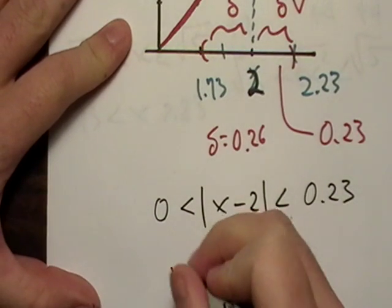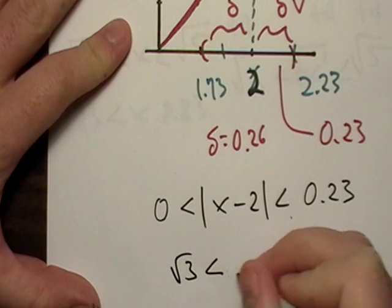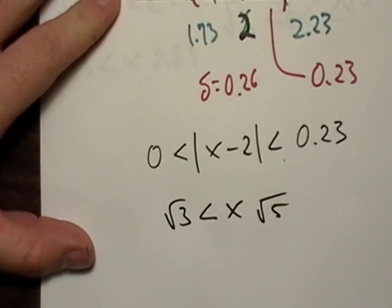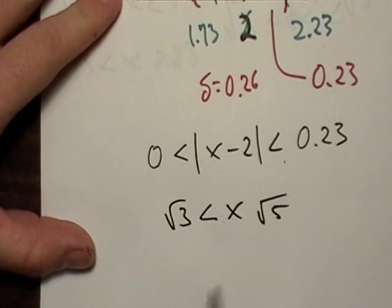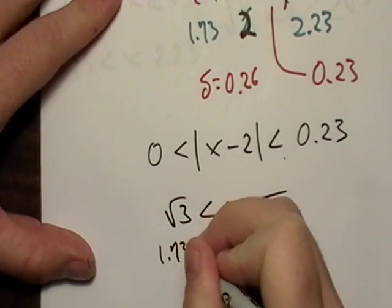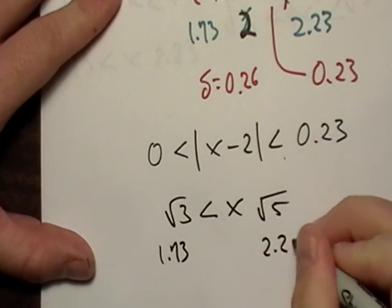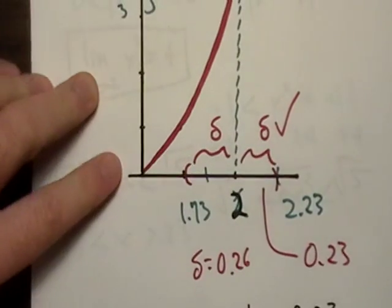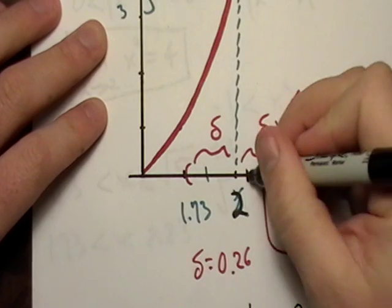Now, remember originally, I had the square root of three being less than x, being less than five. And as long as I'm in between that, which is 1.73 and 2.23, as long as I'm in between there, I'm good, right? All right. So what I'm going to do is I'm going to pick 2.10.